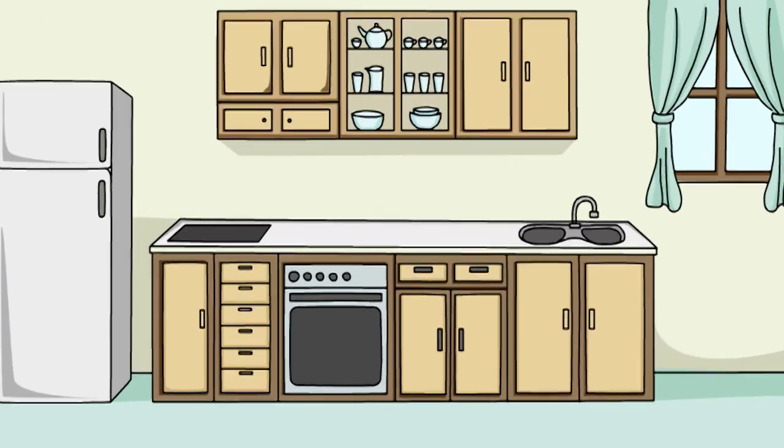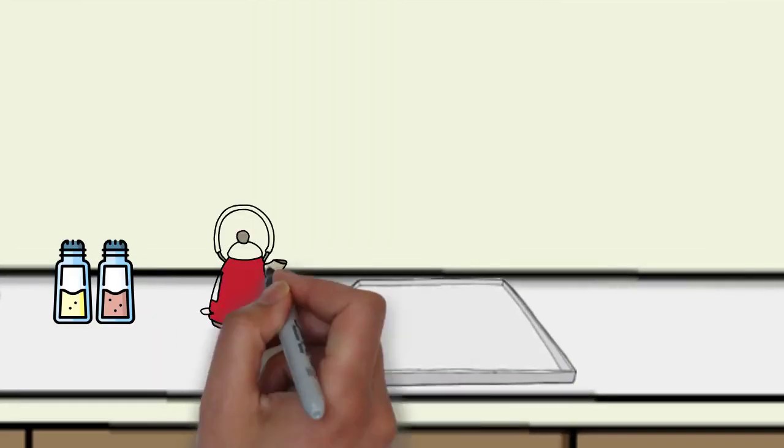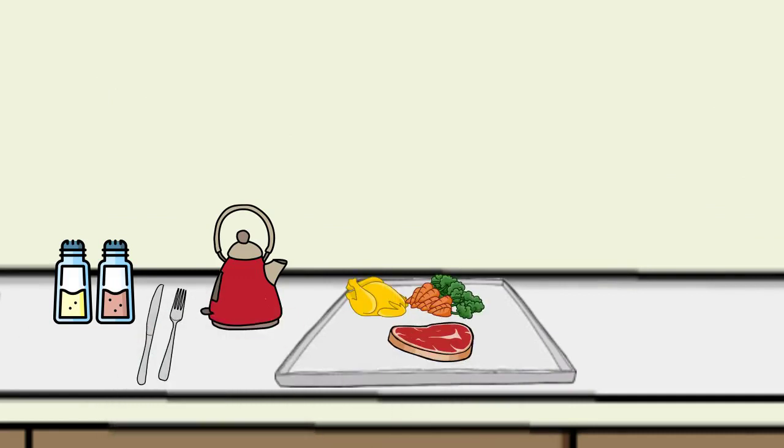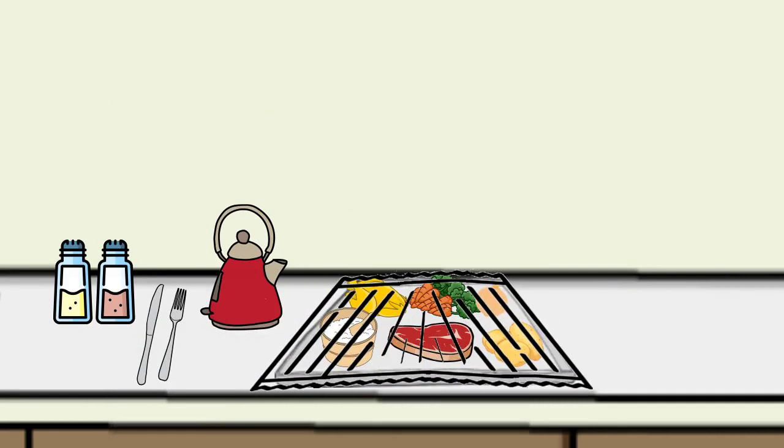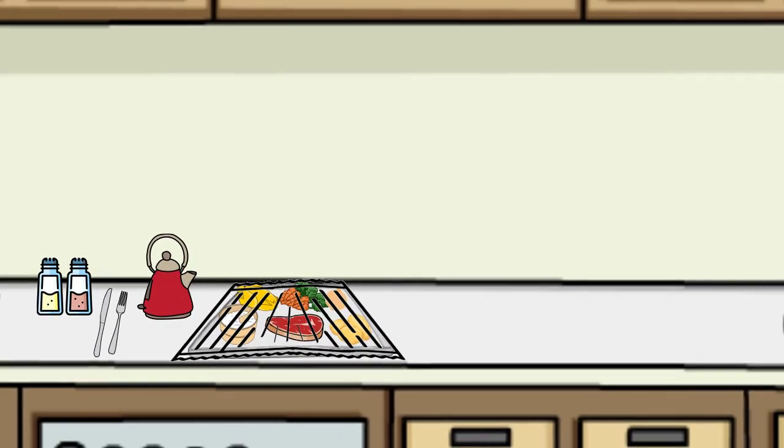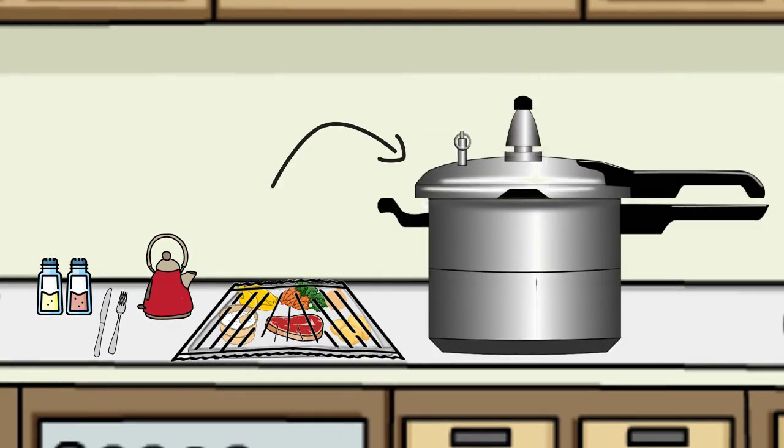Our delicious and healthy ingredients are prepared and placed into a specially made high grade retort tray. The meal tray is then hermetically sealed and loaded into our retort machine for cooking.